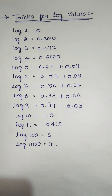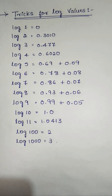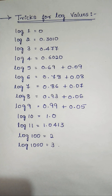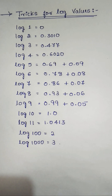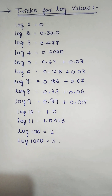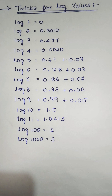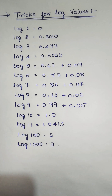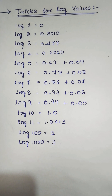Tricks for log values. Log 1 is equal to 0. Log 2 is equal to 0.3010. Log 3 is equal to 0.477. Log 4 is equal to 0.6020.